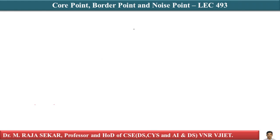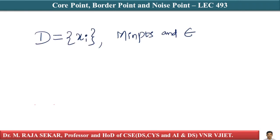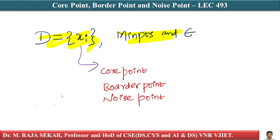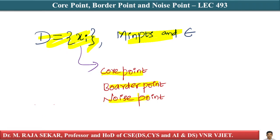Welcome to Raj Shaker Classes on Applied Data Science with Python. This is lecture number 493. In this lecture we will try to understand core point, border point, and noise point. For every point in our dataset D, where D equals the set of x_i given min_points and epsilon, I can categorize every point in my dataset as a core point, border point, or noise point.